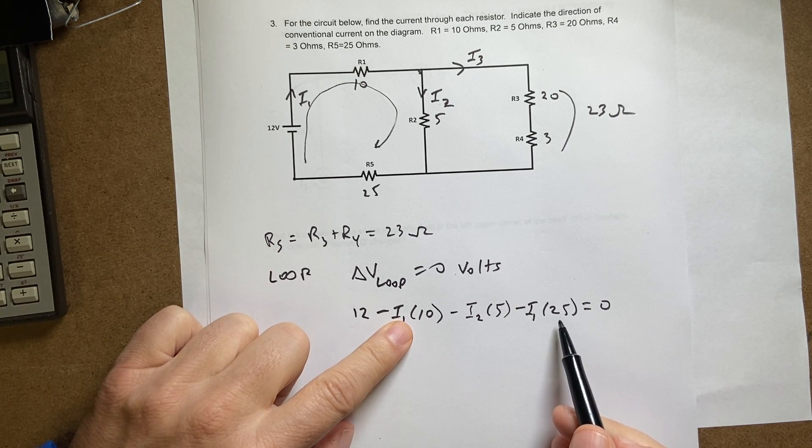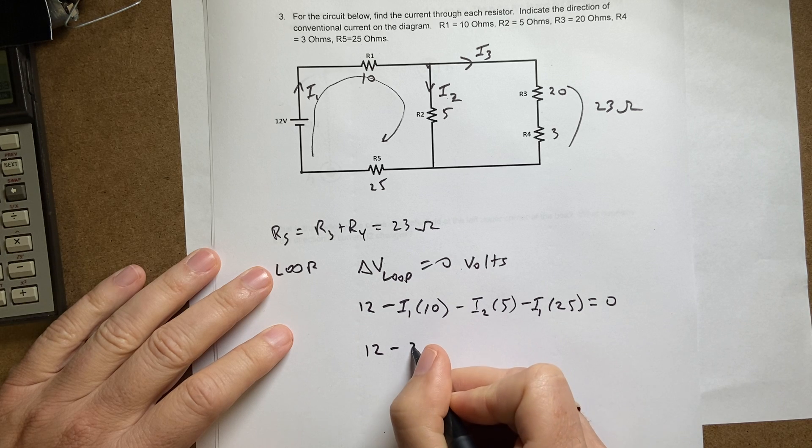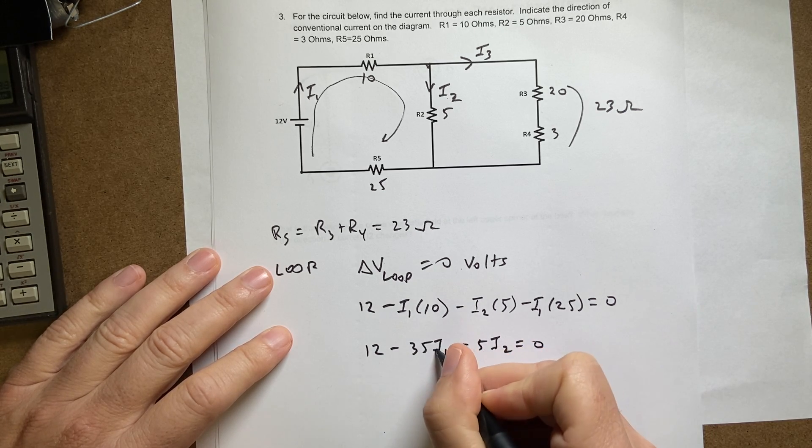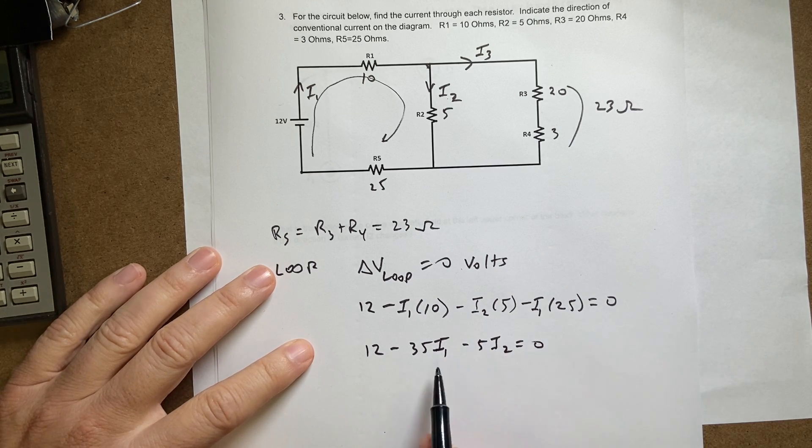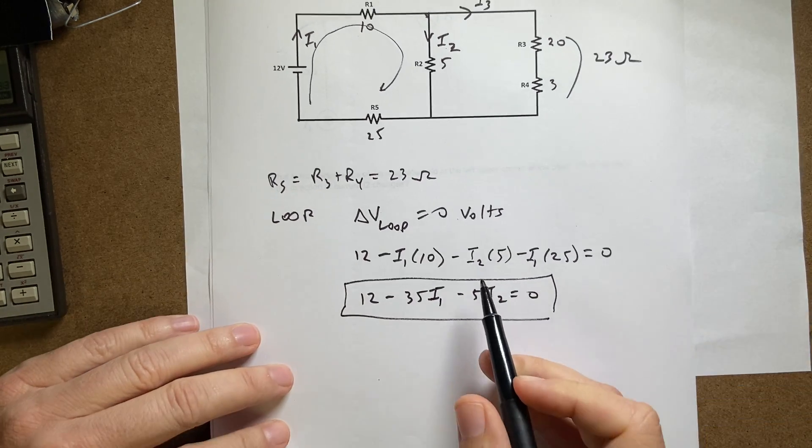So it's going to be 12 minus 35 i1 minus 5 i2 equals zero. Okay, but I still have two variables I don't know, so I can't solve that equation.